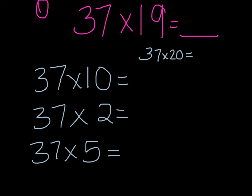Let's begin. So 37 times 10 — I'm going to cover that zero up. 37 times 1 is 37, and then I add that zero back, so it's 370. Then I'm going to go on to 37 times 2, which is just 37 doubled. So 37 times 2 is 74.